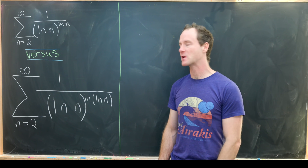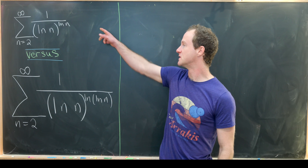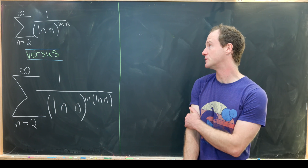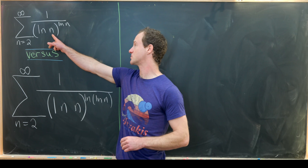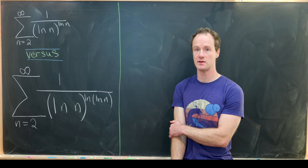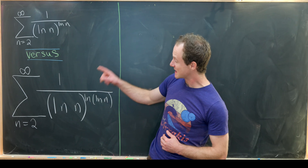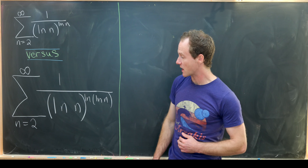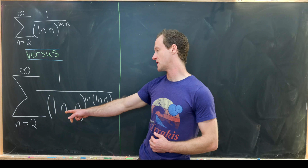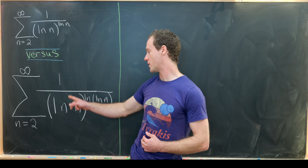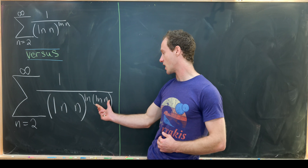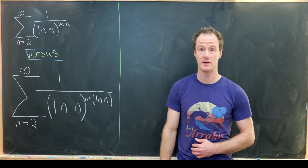Let's look at our first series: the sum as n goes from two to infinity of one over natural log of n to the power of natural log of n. The second series looks almost exactly the same — it's the sum as n goes from two to infinity of one over natural log of n to the natural log of natural log of n.